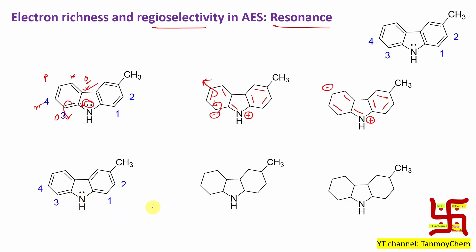Now looking at the right-side ring: with respect to this nitrogen, one position is ortho, another is ortho — but one ortho is blocked, and para is also blocked. So only two options are available: ortho and meta on this side. Drawing the structure: it opens up, there is a double bond, nitrogen carries a positive charge. In the next canonical form, the negative charge goes to the position where there is already a methyl group — so no aromatic electrophilic substitution is possible there. That canonical form therefore has no meaningful consequence.